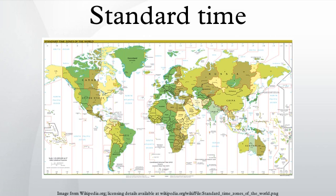Major American observatories, including the Allegheny Observatory, the United States Naval Observatory, the Harvard College Observatory, and the Yale University Observatory, agreed to provide telegraphic time signals at noon eastern time. Standard time was not enacted into U.S. law until the 1918 Standard Time Act established standard time in time zones. The law also instituted daylight saving time. In 2007, the U.S. enacted a federal law formalizing the use of coordinated universal time as the basis of standard time, and the role of the Secretary of Commerce and the Secretary of the Navy in interpreting standard time.